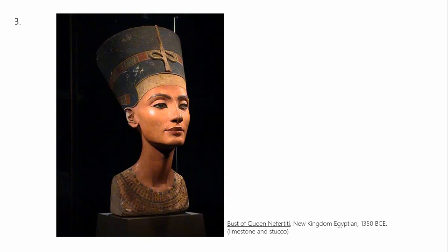The Bust of Queen Nefertiti. What are some of the things we know about this piece? Don't forget that it is limestone — carved limestone — but then with stucco, which is clay, painted on top of the stucco. So it is both an example of reductive sculpture and additive, in that the underlying piece is made out of stone and was carved, but then stucco would have been molded around the form and worked more additively.